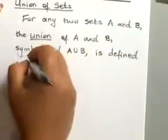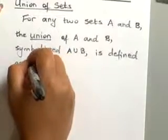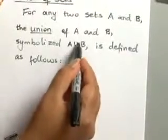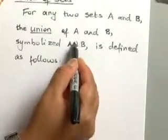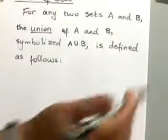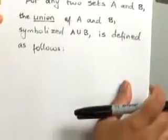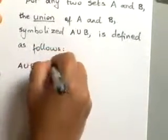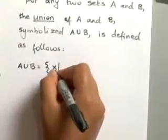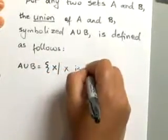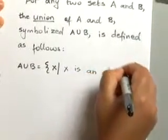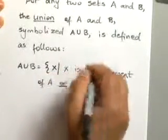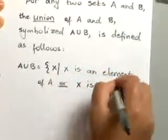When you're talking about the union of two sets, you use the 'U' symbol — A union B. This 'U' here is your union symbol, and it's defined using set notation: the union contains element x such that x is an element of set A or x is an element of set B.